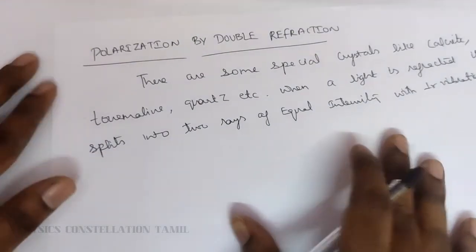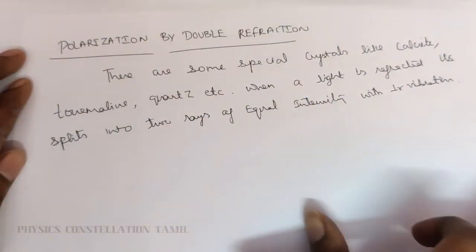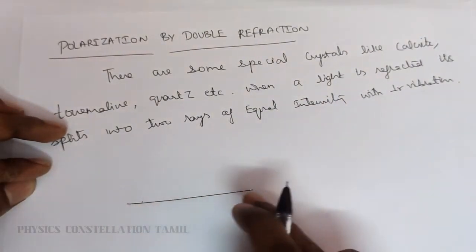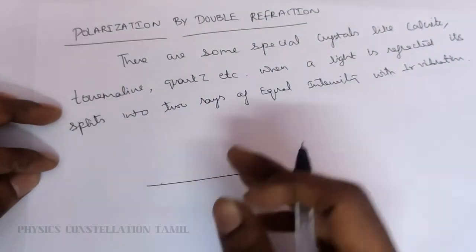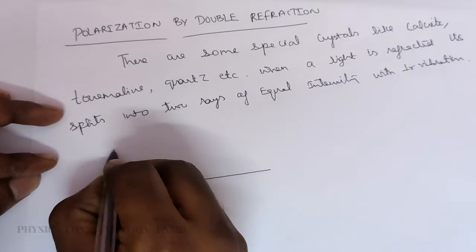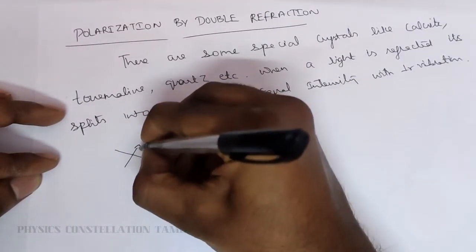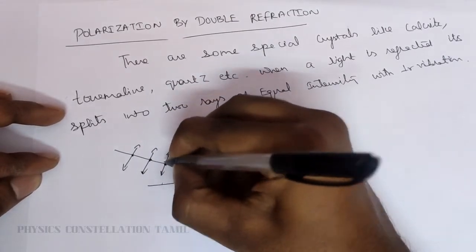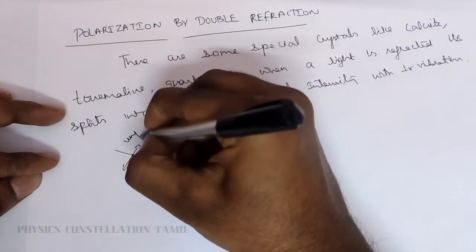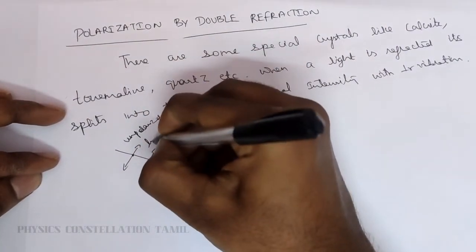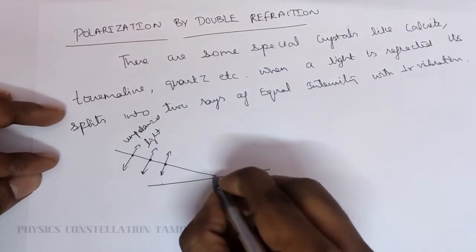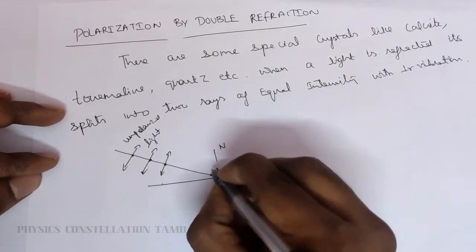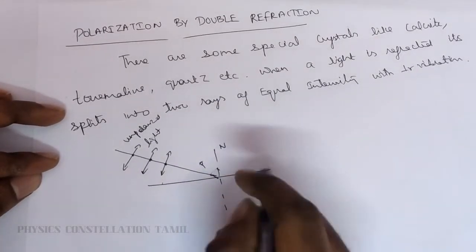That is what we call polarization by double refraction. Now I will explain with a diagram. Say we have a surface — this is the interface between two mediums. A light ray is incident like this; the light ray is unpolarized. We draw a normal at the point of incidence, so the angle of incidence is I.